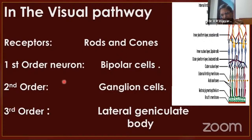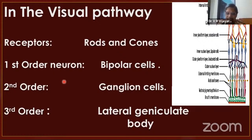Also note: the optic nerve portion near the eye is called the distal portion — not proximal. Anything towards the brain is called proximal. So the area towards the chiasma is the proximal portion of your optic nerve.